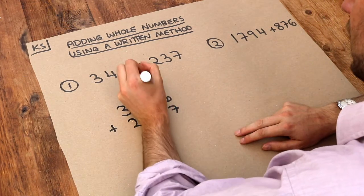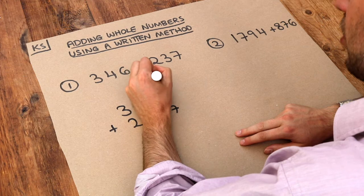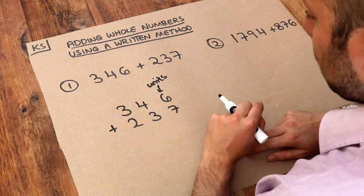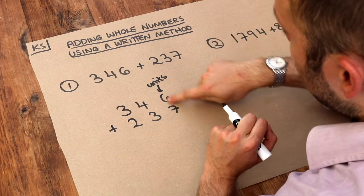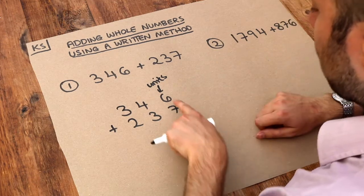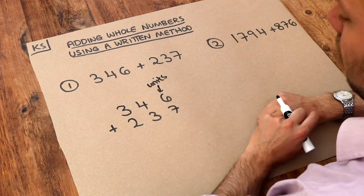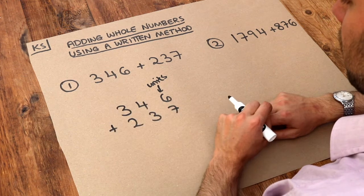So the place value to the right is the units column. We don't need to write that in when we do our working, but we make sure that all the numbers in the same column have the same place value, with the rightmost column being the units column. That would be the tens column, that would be the hundreds column.